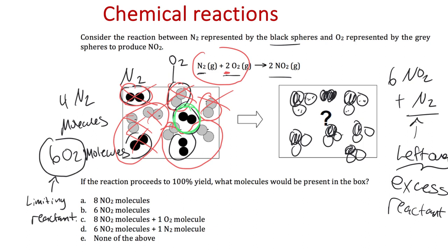So we have three possibilities: N₂ in excess (which is this problem), O₂ in excess (if we had nine or more O₂ molecules), or the stoichiometric case where we have exactly the right ratio — neither is in excess, both are completely consumed. In this problem, N₂ is in excess and O₂ is the limiting reactant.